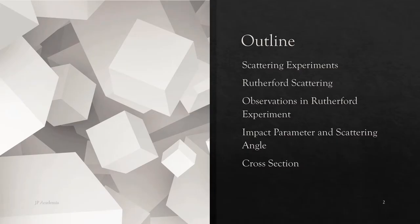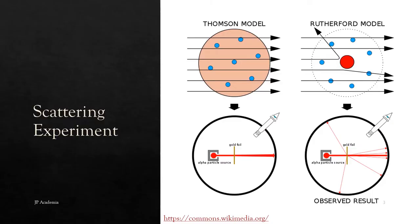This is the outline of this lecture video. In this illustration, this is a simple diagram showing the Geiger-Marsden experiment. The left column shows the scattering pattern that the experimenter expected to see given the Thomson model, also known as the Plum-Pudding model of the atom.